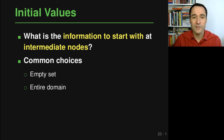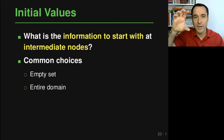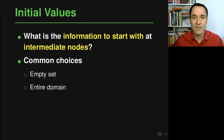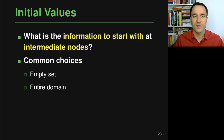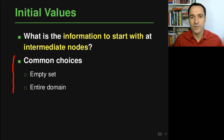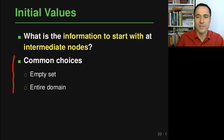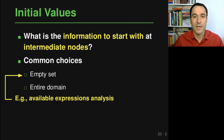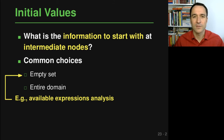Property number six is the initial values, which tell us what information to start with at intermediate nodes. When the analysis reaches a node it hasn't seen before, it needs an initial analysis state. Again the typical choices are the empty set or the entire domain. For available expressions we used the empty set, because before really thinking about a statement we cannot assume any expression is available.